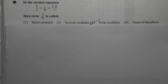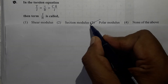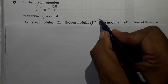Next question: In the torsion equation T/J = τ/R = Cθ/L, the term J/R is called as? It is a simple question. The term J/R in the torsion equation is called the polar modulus. That is why option 3 is the correct option.